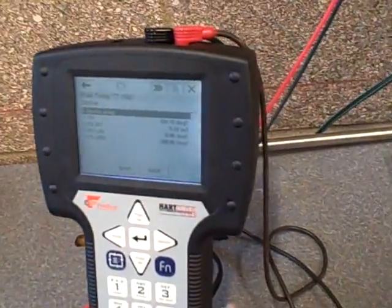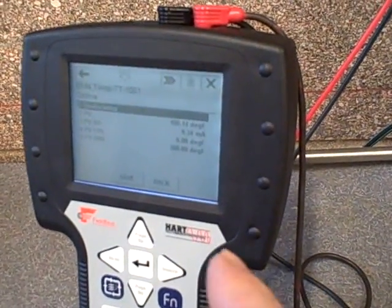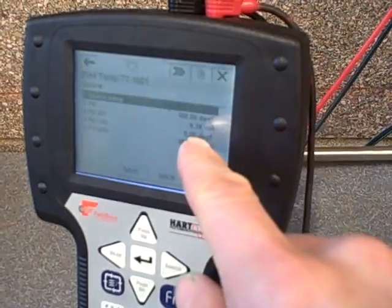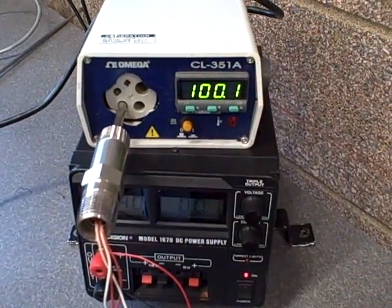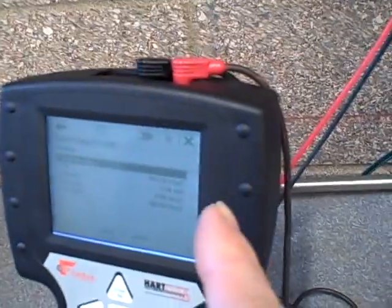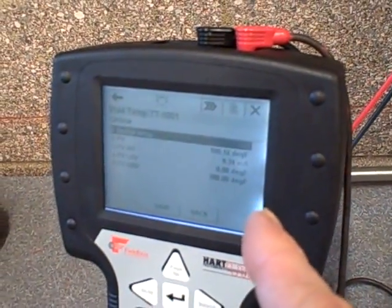We're reading the temperature, or at least what the transmitter thinks the temperature is, with the 375 smart communicator. Right now it says 100.08, 100.15, and we see 100.1 over here. So real life is in agreement with the displayed process variable value.